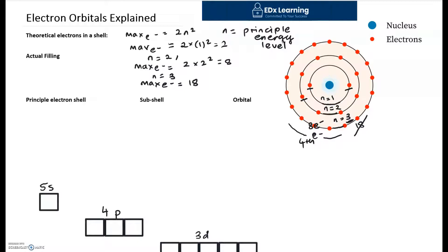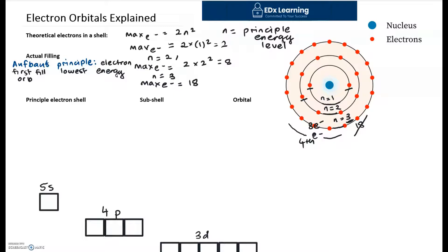The reason energy levels fill to 8 and not to their maximum capacity is due to a German principle known as Aufbau's principle. Aufbau's principle states that electrons will first fill their lowest energy orbitals before moving to higher energy orbitals. Now let's talk about what orbitals and subshells mean.